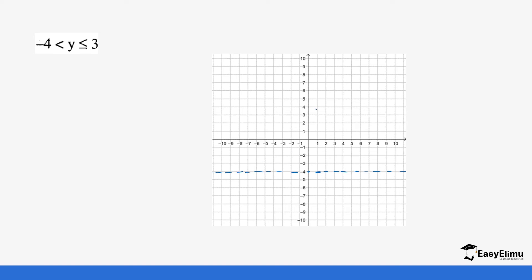The second condition is y is less than or equal to three. Since it is less than or equal, the line at three is going to be bold — draw a bold line using your ruler. For y greater than negative four, we want all values of y above negative four, so the values below are unwanted and we shade the lower part.